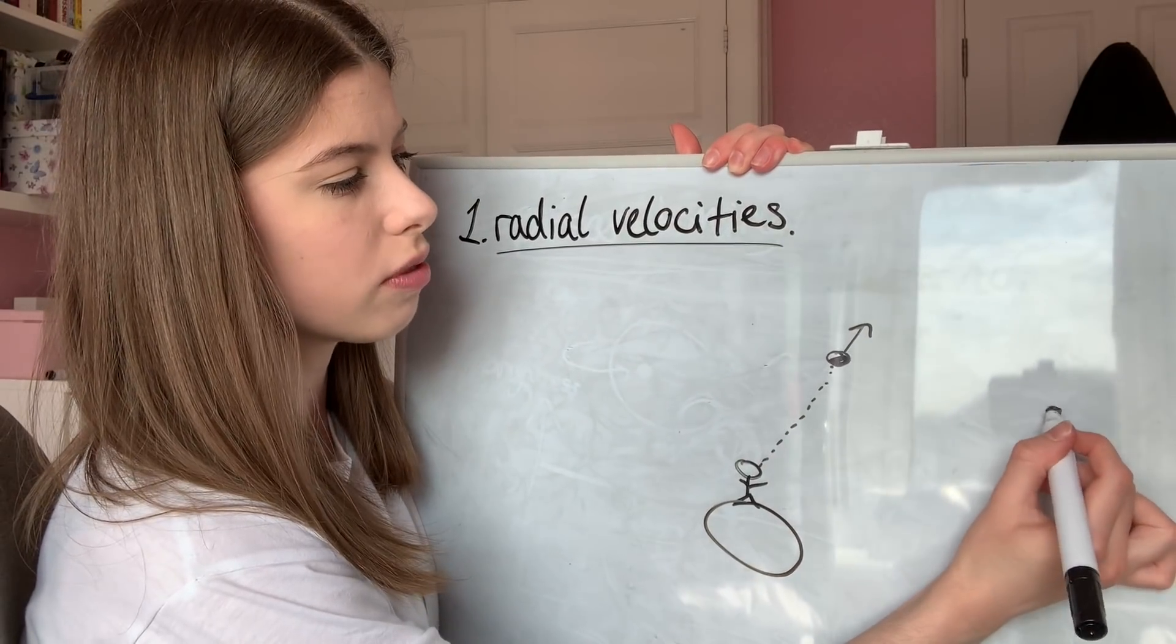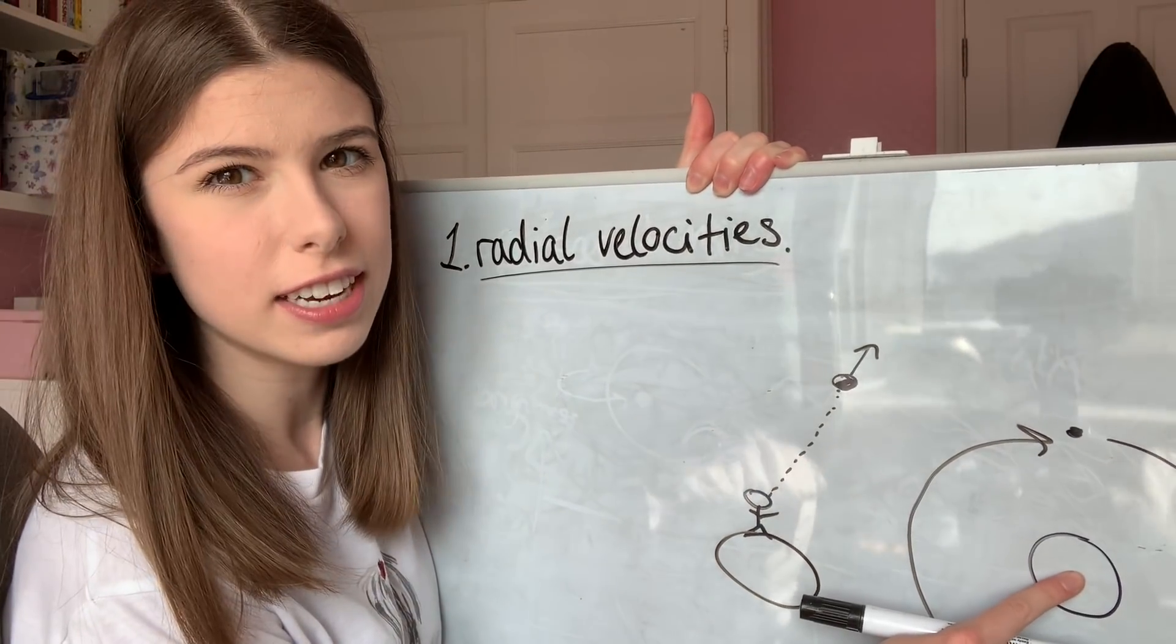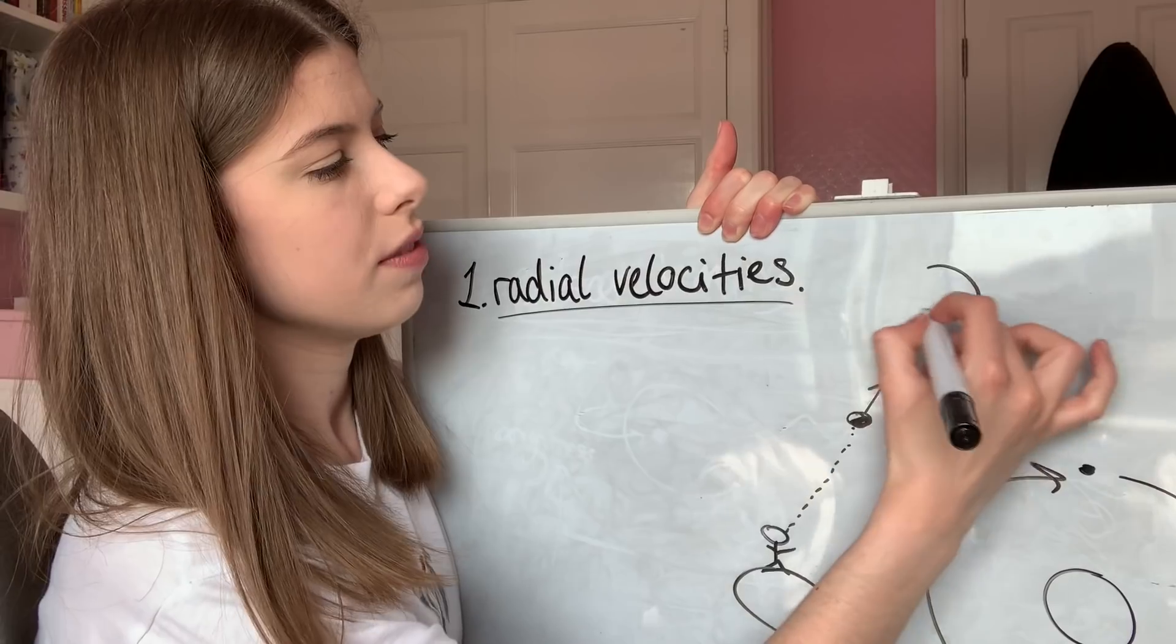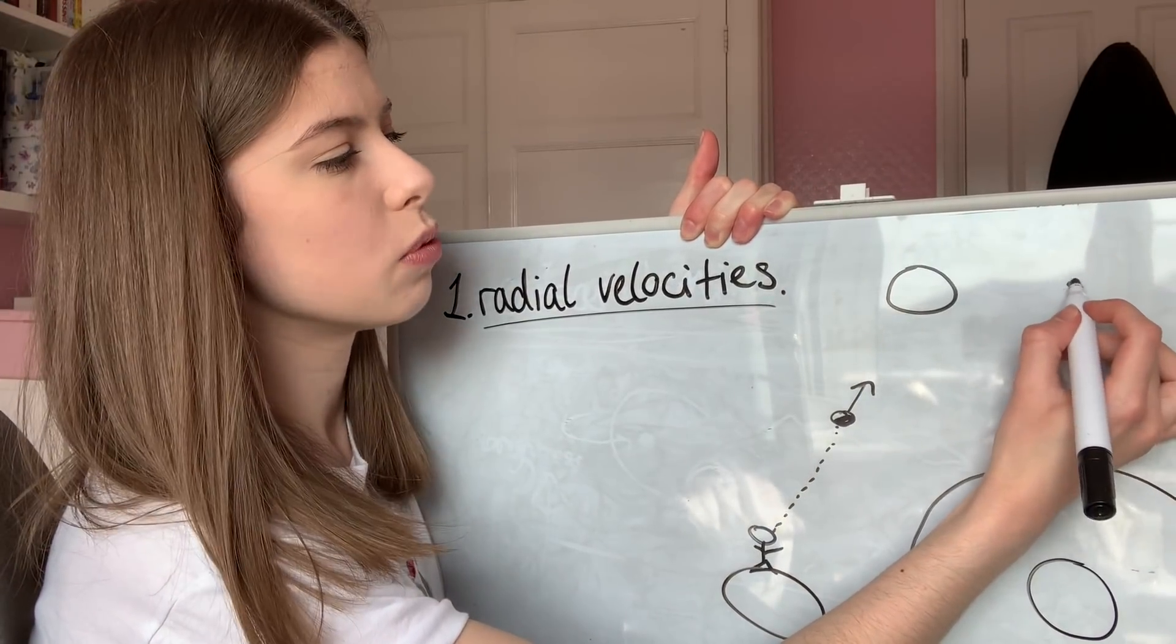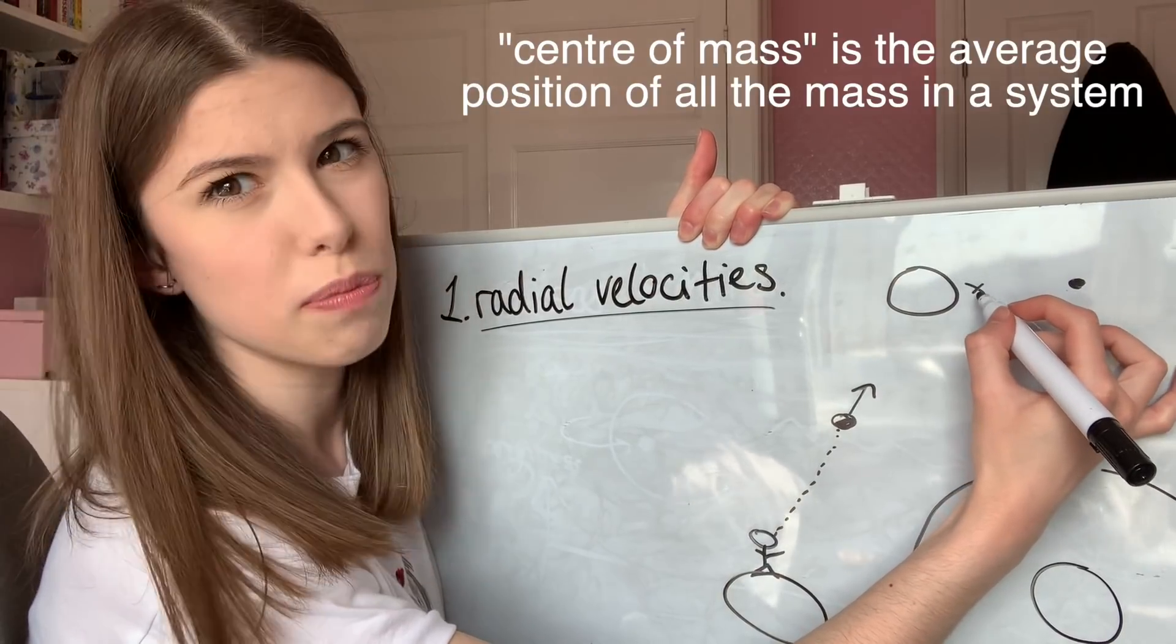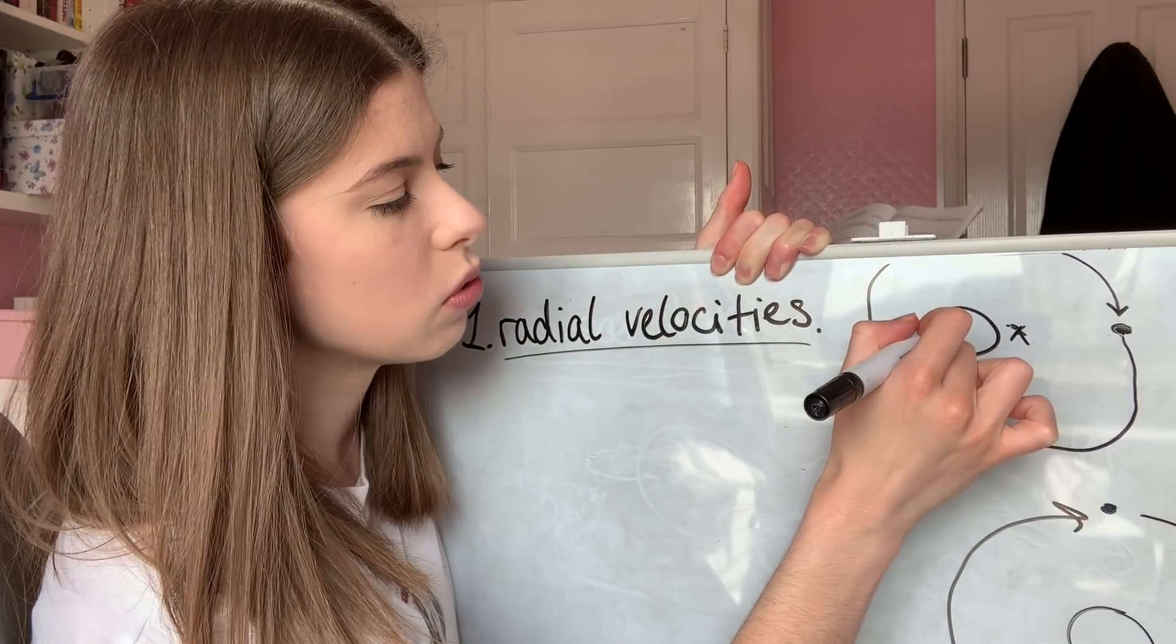Now usually we think of really small objects orbiting massive objects, and the massive object in the center remains fixed in position. However, this isn't technically correct. If you have a large object and a small object, they are actually both orbiting around their center of mass. The center of mass is obviously closer to the more massive object.